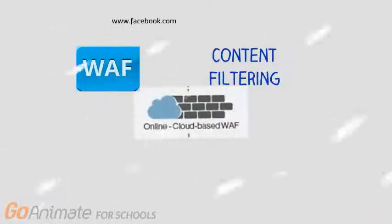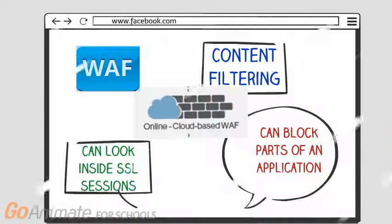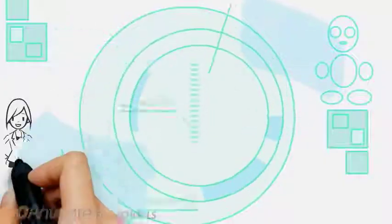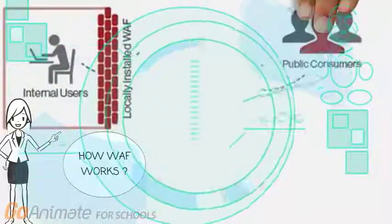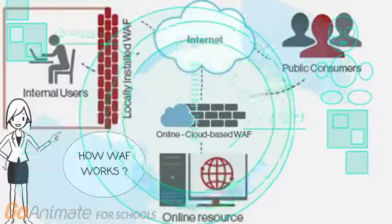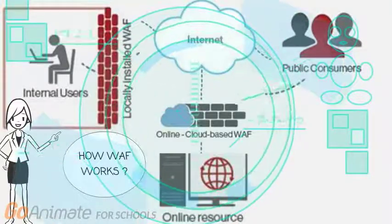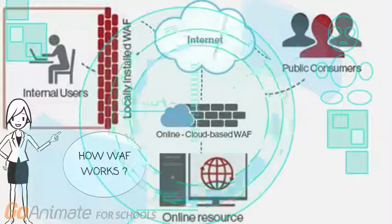WAFs are more of a content filter rather than just a packet filter. They can be configured on a very granular level and can block certain parts of applications without blocking the entire application. For example, a WAF can be configured to block a Facebook game without blocking the user from Facebook altogether. WAFs can even look inside SSL sessions to ensure an attacker is not hiding their presence. A WAF filters, monitors, and blocks HTTP traffic to and from a web application. By inspecting HTTP traffic, it can prevent attacks stemming from web application security flaws such as SQL injection, cross-site scripting, and security misconfigurations. They can look at the content of the traffic and if it is sensitive information, prevent the traffic from leaving the network.